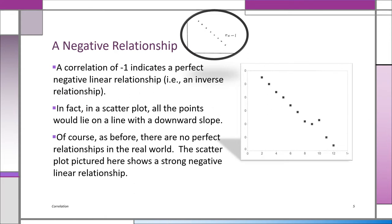Now we're looking at negative relationships. If you get an R of minus one—which again is not going to happen in the real world—all the points are on a straight line: a perfect negative or inverse linear relationship. But if you look at the scatter plot on the side, the points are definitely showing a linear negative slope, though some points are not exactly on the line. What we see is a very strong negative linear relationship, but it's not going to be minus one.